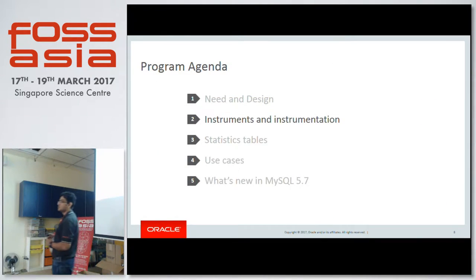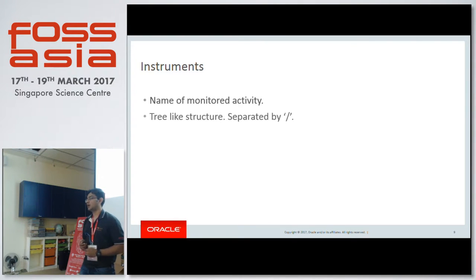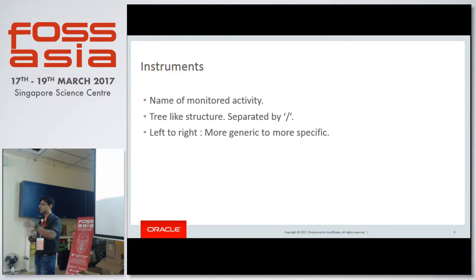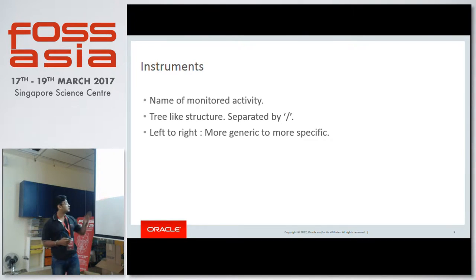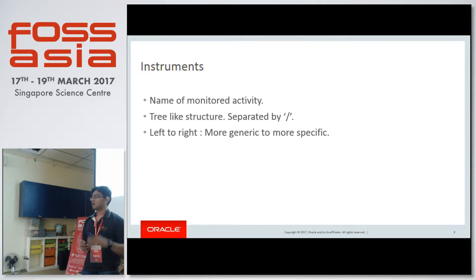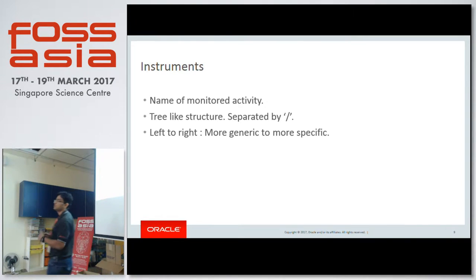Let's talk about instruments and instrumentation. Instruments are the names we give to activities we monitor in MySQL server execution. In MySQL server there are multiple activities happening behind the scenes, and to uniquely identify those activities we give them names — those are called instruments. They have a tree-like structure where different parts are separated by forward slashes, and as we move from left to right we go from generic to more specific.